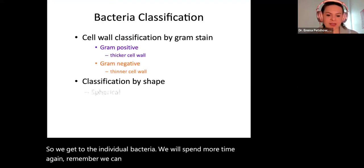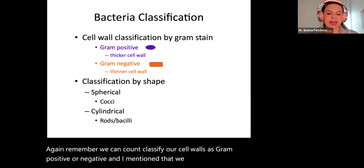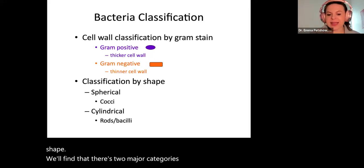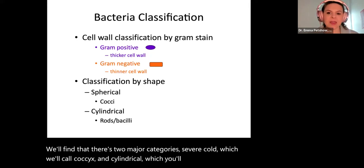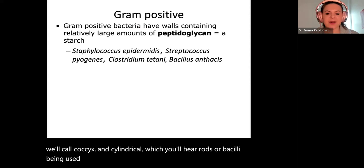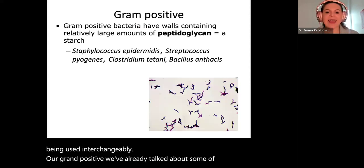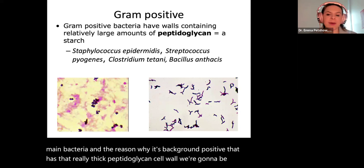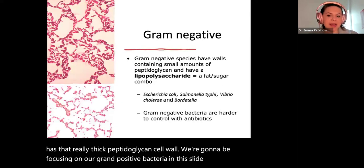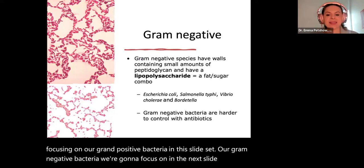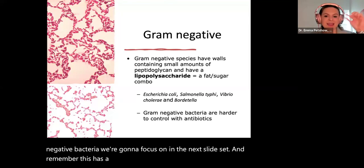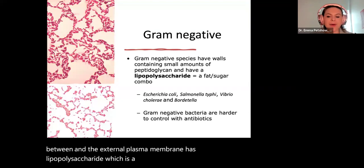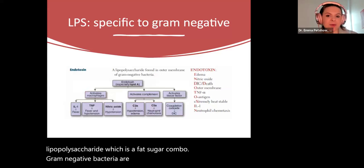We can classify our cell walls as gram positive or negative, and we can classify our bacteria by shape. There are two major categories: spherical, which we call cocci, and cylindrical, which you'll hear called rods or bacilli interchangeably. Our gram positive bacteria have that really thick peptidoglycan cell wall. We're going to be focusing on gram positive bacteria in this slide set. Gram negative bacteria have a double plasma membrane with a thin cell wall in between, and the external plasma membrane has lipopolysaccharide. Gram negative bacteria are typically harder to control with antibiotics.